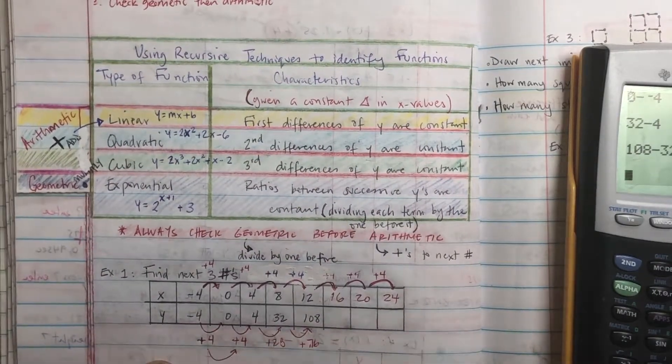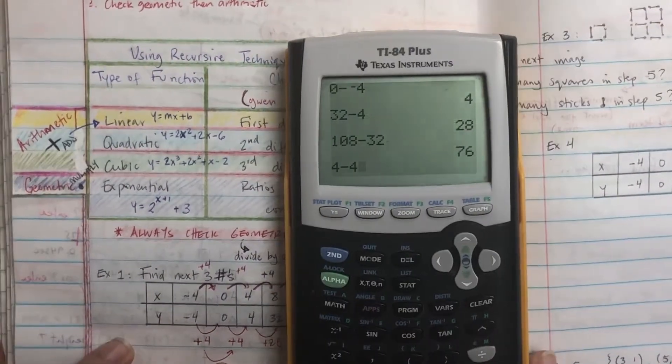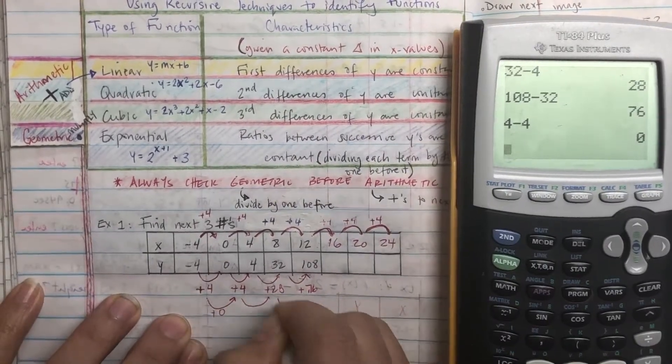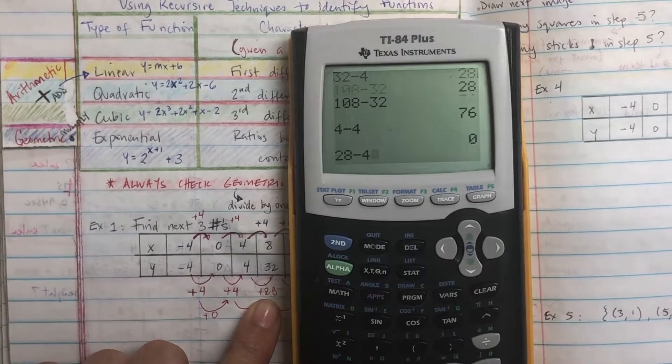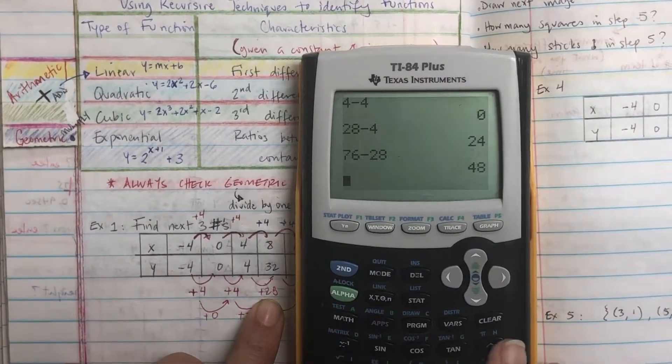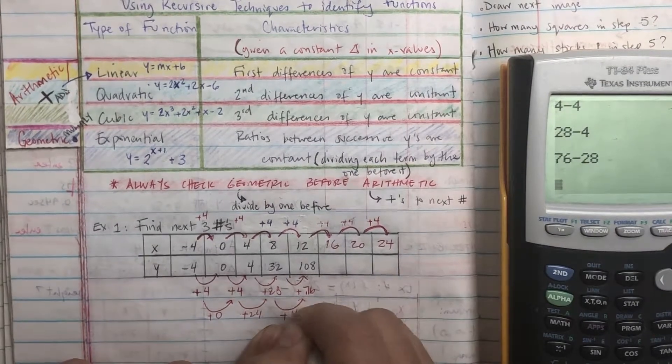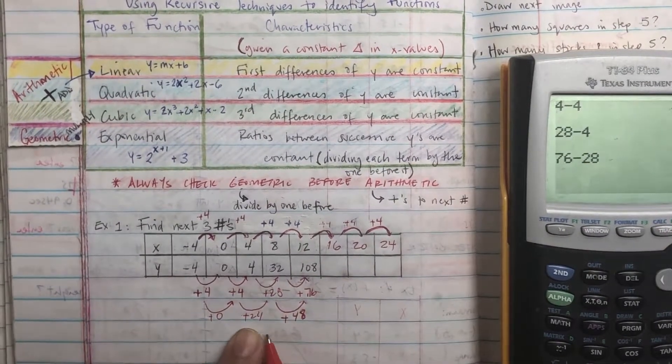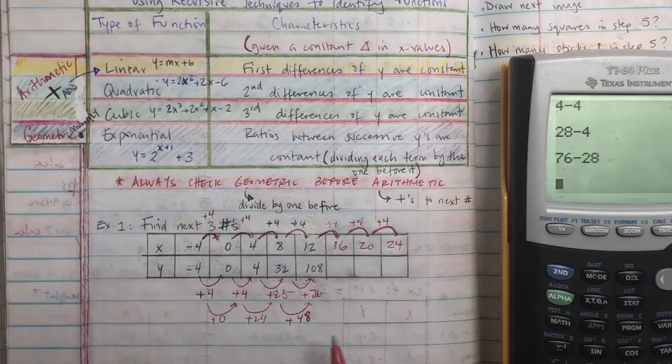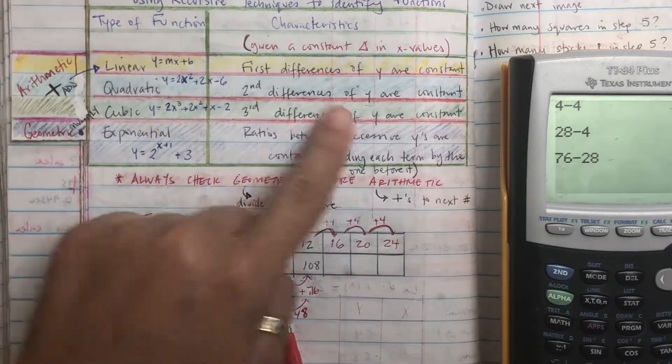I'm going to check if it's quadratic, which means a second difference, meaning you do it again. So second number minus the first number, 0. Third number minus the second. So 28 minus 4, 24. Next number minus that previous number. So 76 minus 28, 48. And do you see if they're changing at the same rate? They are not. So because they're not changing at the same rate, it's not quadratic.